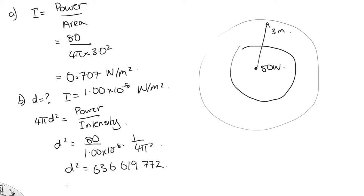Taking the square root, we end up with a distance of 2.52 times 10 to the 4 meters, which is 25.2 kilometers. So quite a long distance away.